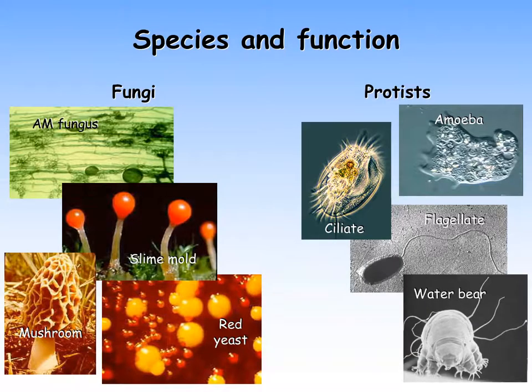Now let's turn our attention to smaller and perhaps less familiar organisms in the soil. Let's start with the fungi — another large group of organisms that include yeast, mildew, molds, and rusts. Although some fungi cause significant crop disease, many are still very important and perform critical functions overall in the soil and for crop health — particularly for grains and vegetables. The arbuscular mycorrhizal fungus shown here forms an arbuscule within the root.